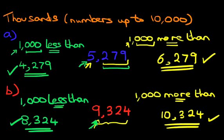And that is correct. So that is how we do more than and less than of thousands with numbers up to 10,000.